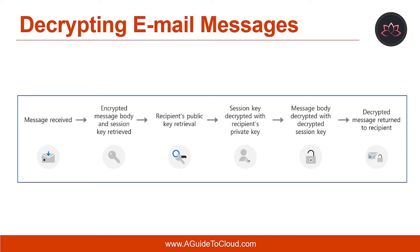If the message has been altered in transit, the decryption operation will fail. Here is an example graphic which displays the sequence of steps involved in decrypting an email message. The process of encrypting and decrypting messages provides for the confidentiality of email messages. This process addresses a serious weakness in internet email — the fact that everyone can read any message.